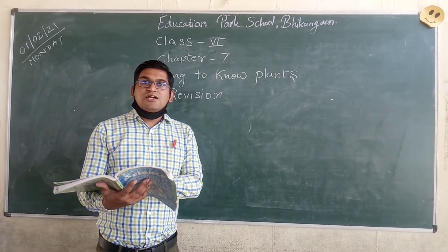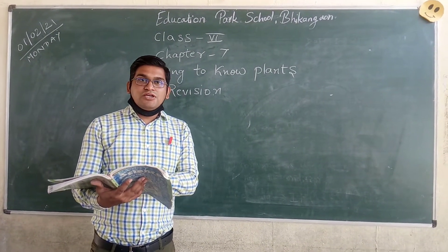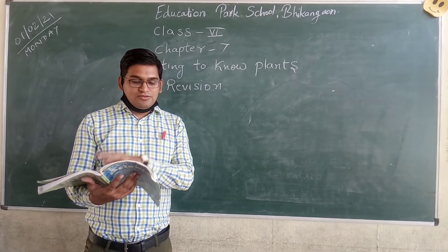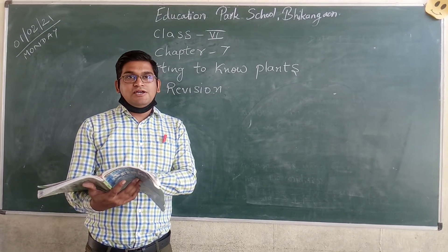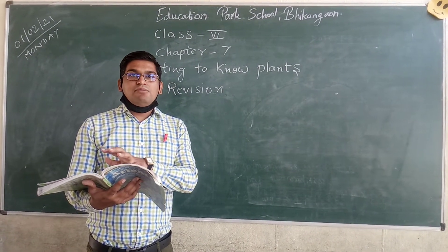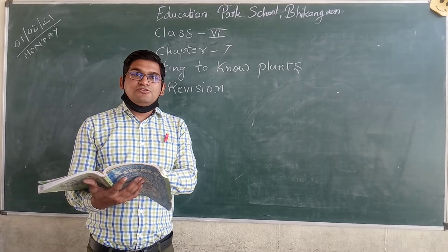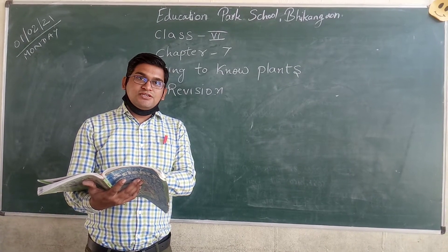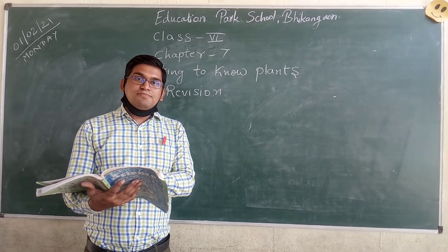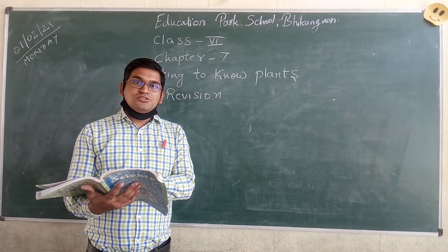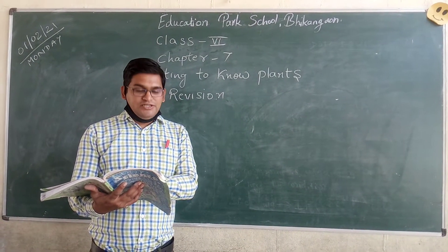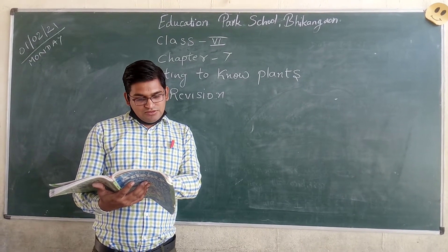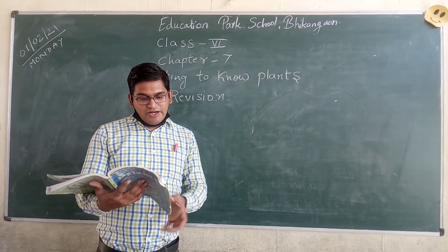This classification activity asks you to identify what are the herbs, what are the shrubs, what are the trees, using Table 7.1. This is your activity.